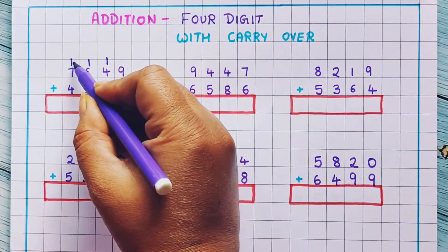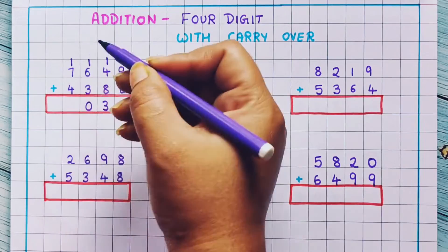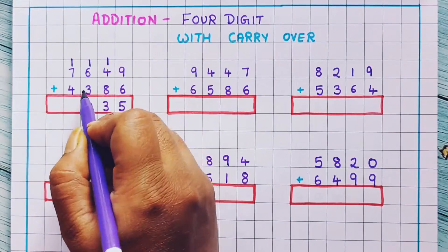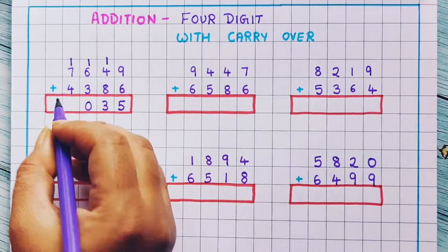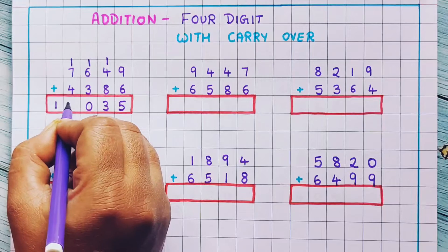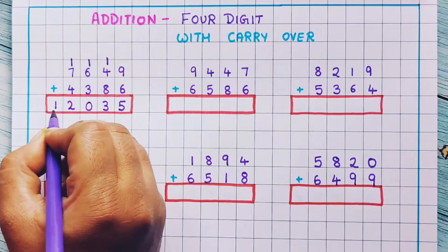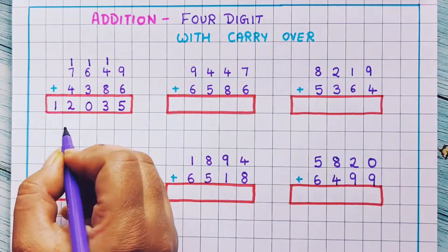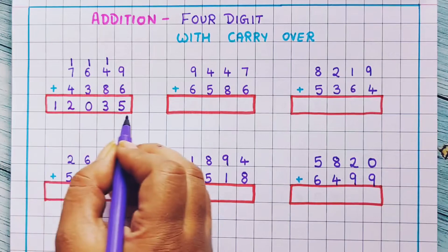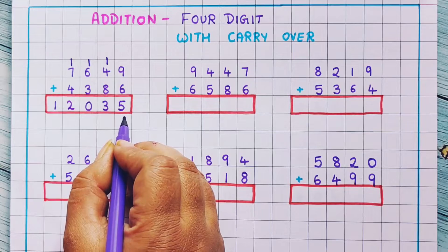7 plus 1 is 8, and 8 plus 4 is 12. So here I will write 12. The answer is 12,035.